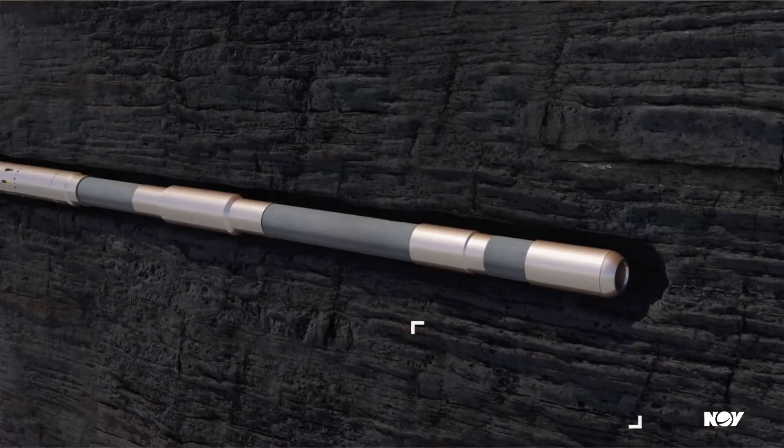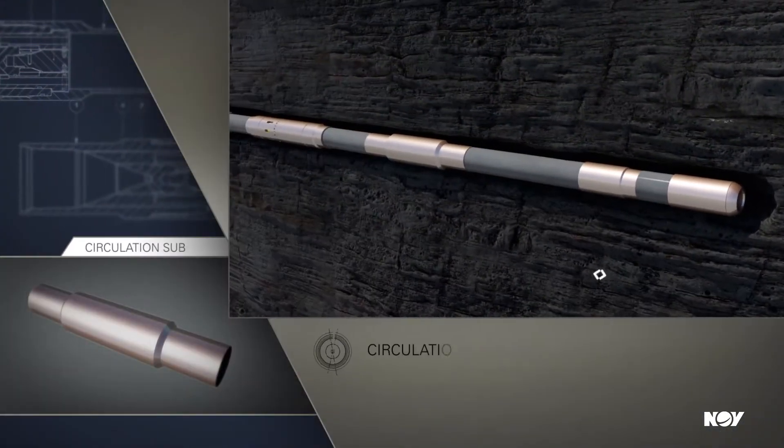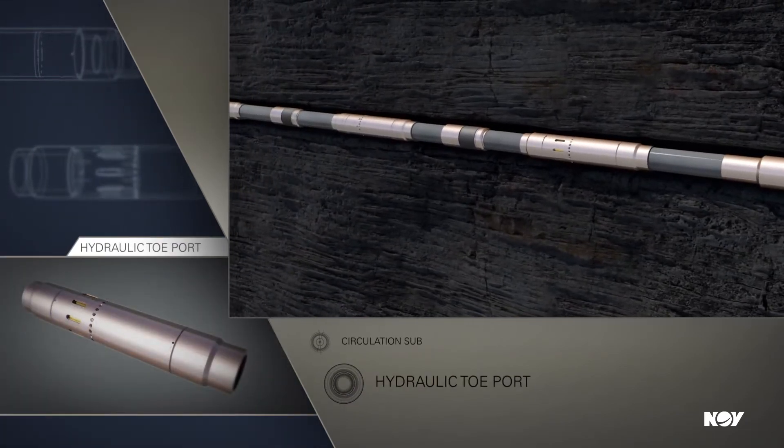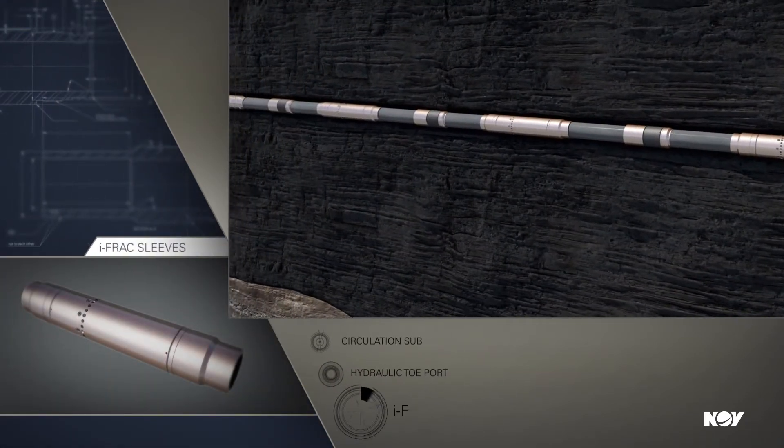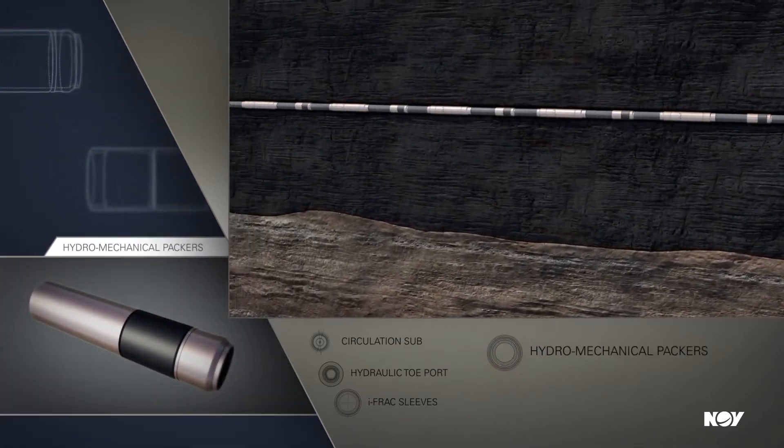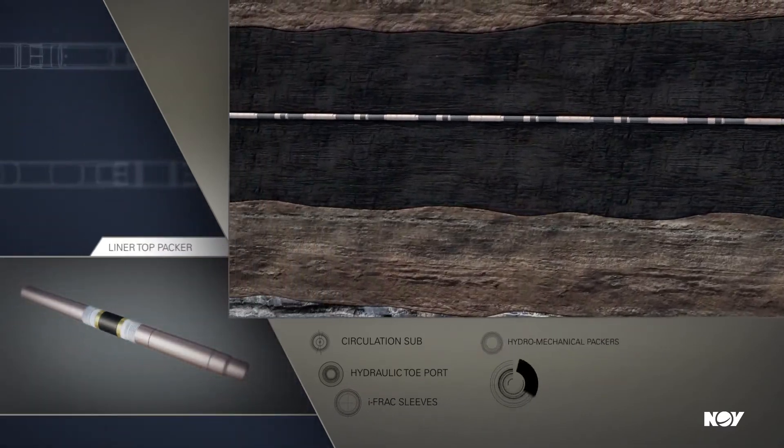The IFRAC open hole system consists of a circulation sub, hydraulic tow port, ball-activated IFRAC sleeves, hydromechanical packers for zonal isolation, and a liner top packer.